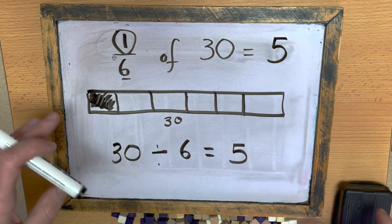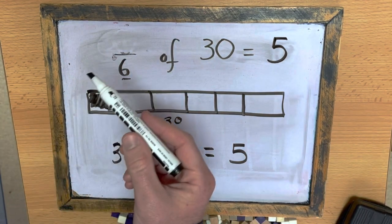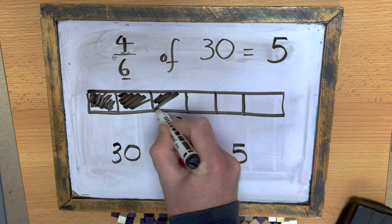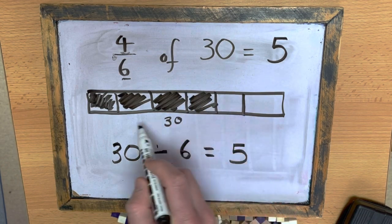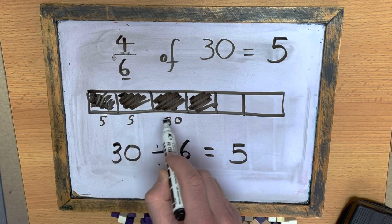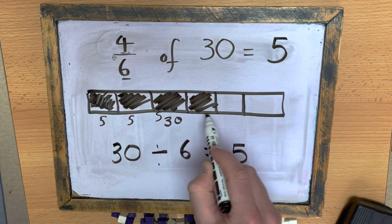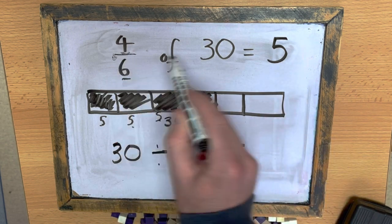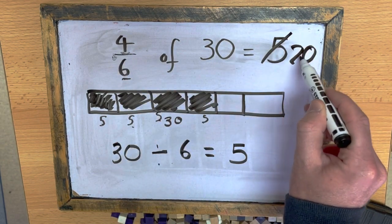And if it was four-sixths, so that would be 4 pieces. Because I know that one piece is 5, the second bit should be 5, this bit would be 5, this bit would be 5, that would be 5, 10, 15, 20. So, four-sixths would be 20.